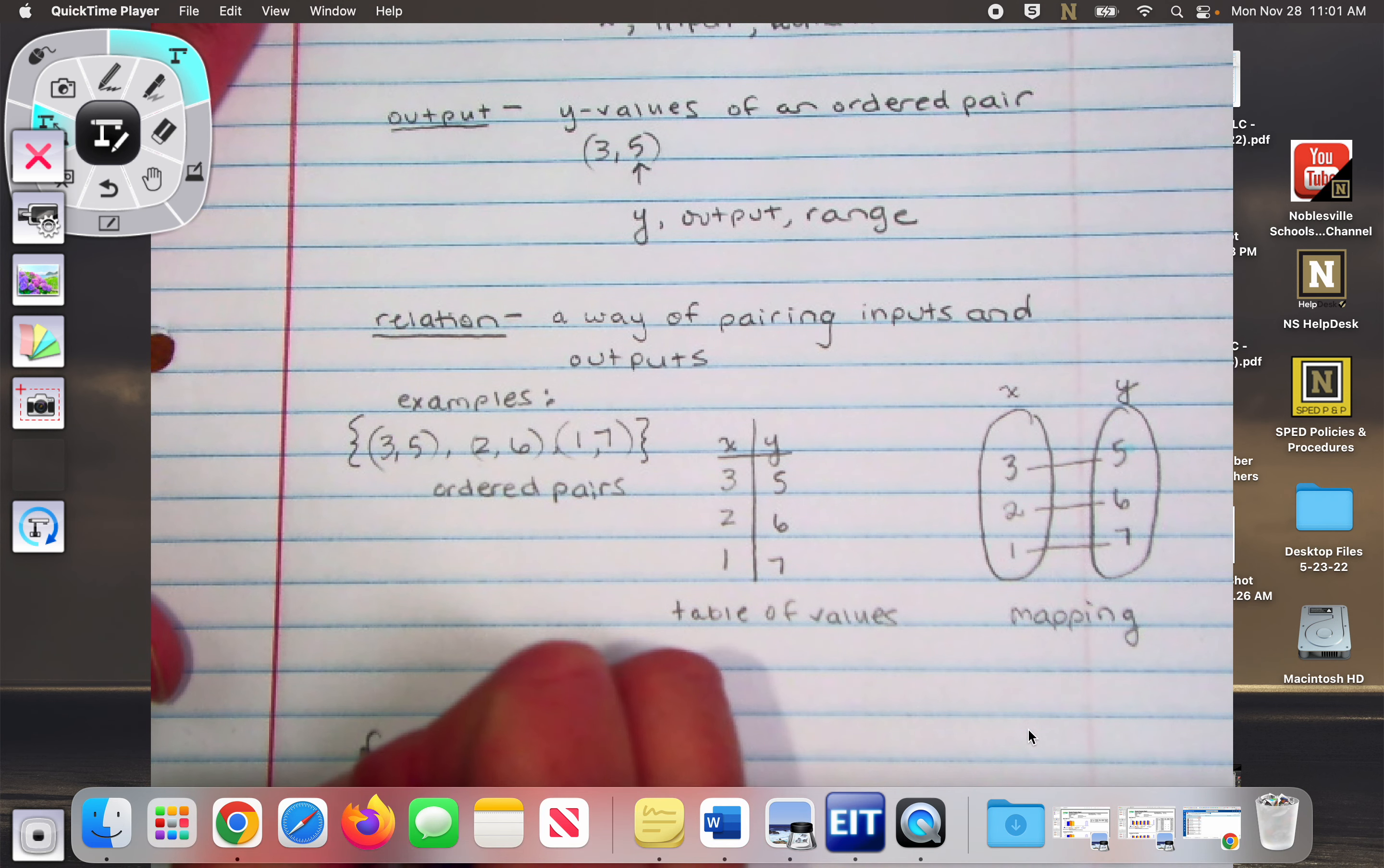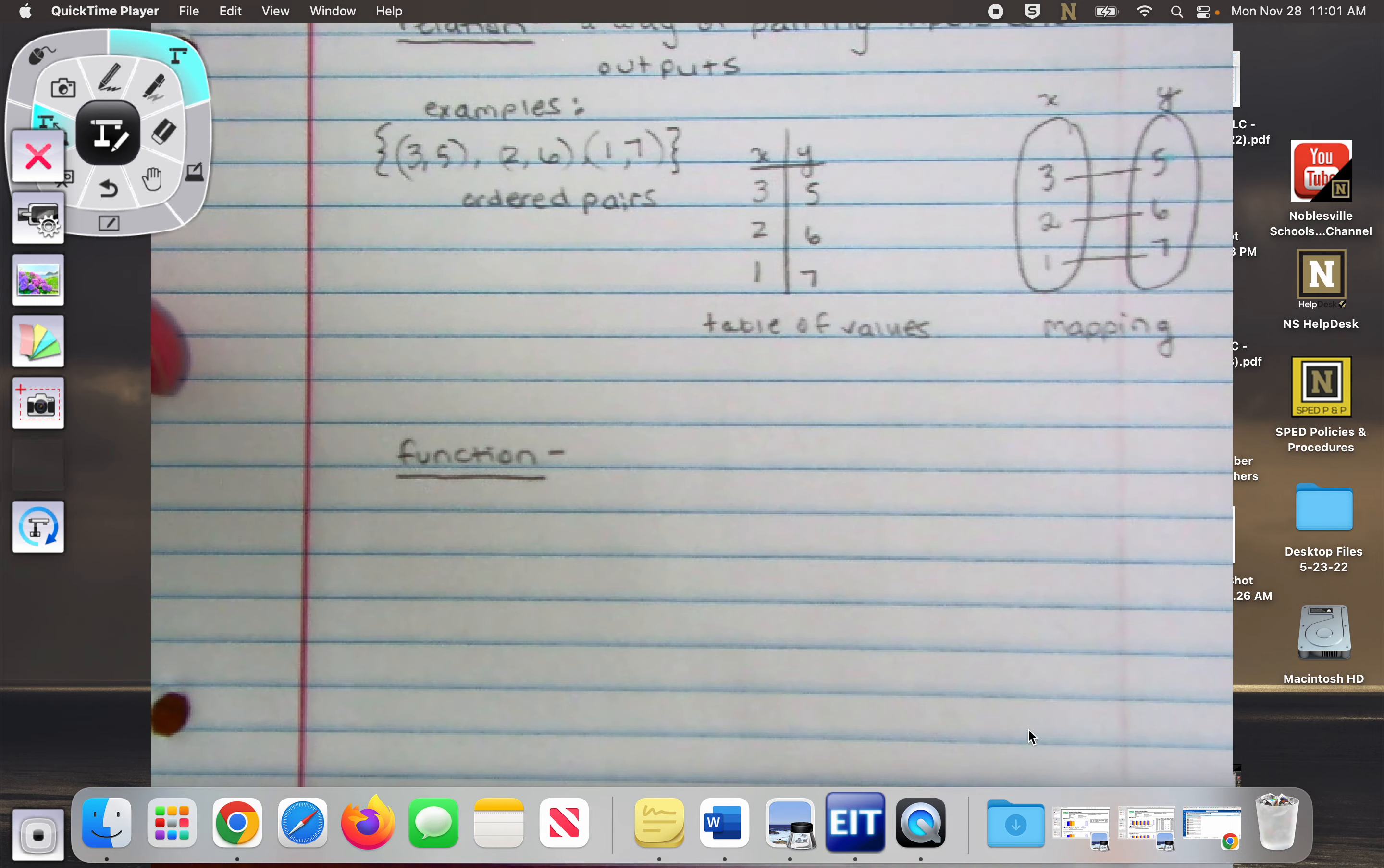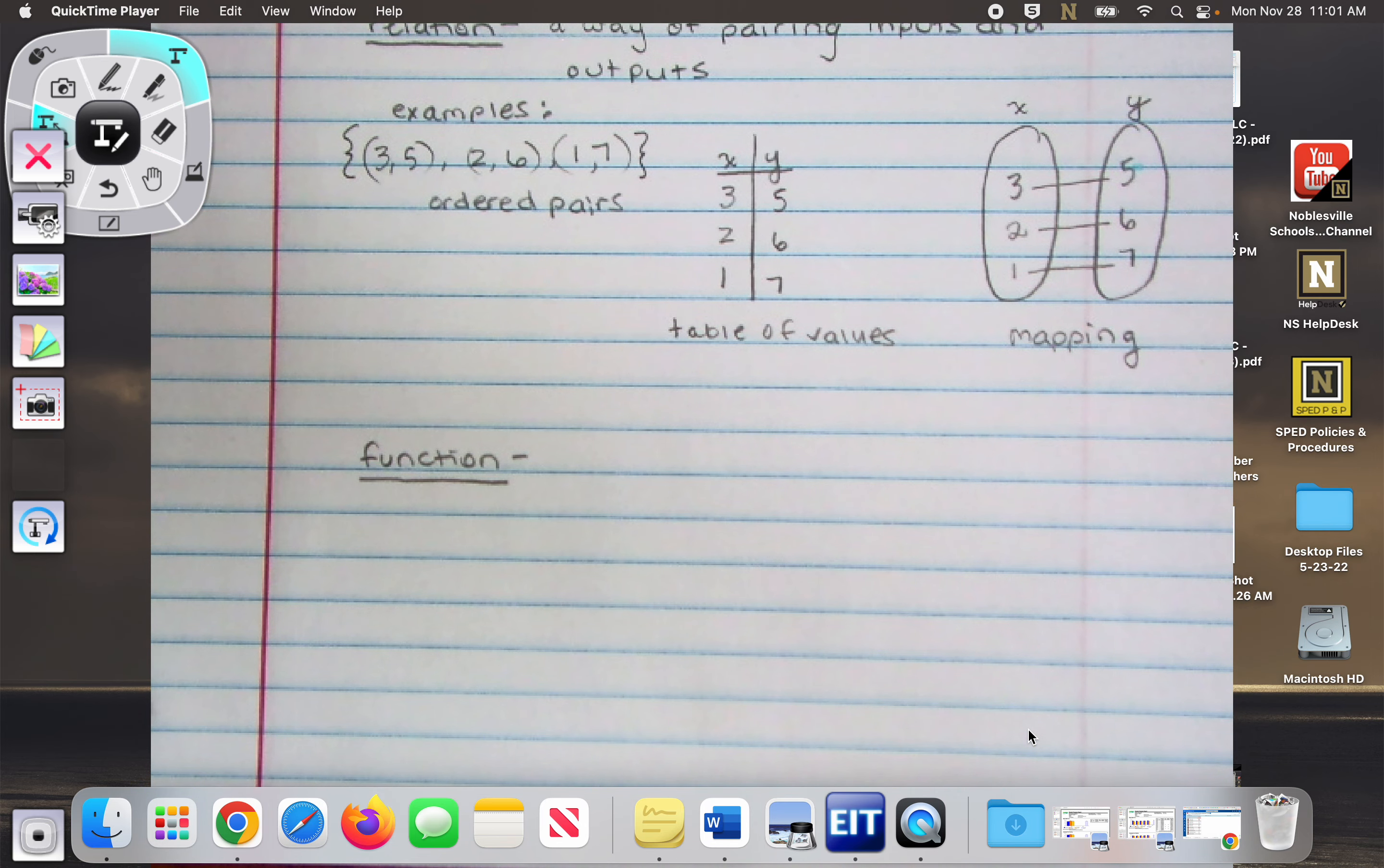Okay. And then our last vocabulary word is what we've been waiting for, the word function. So we have relations, and then relations can either be one of two things, a function or not a function. Okay.